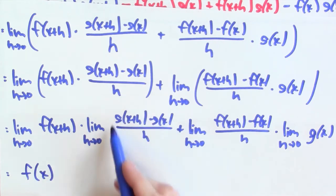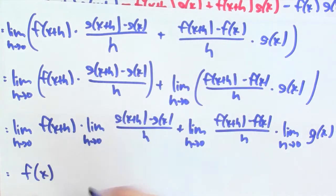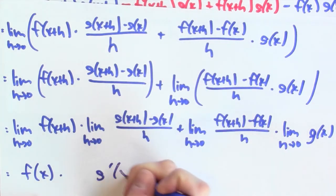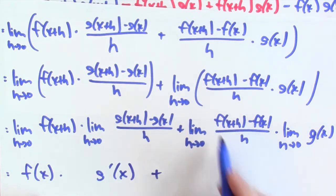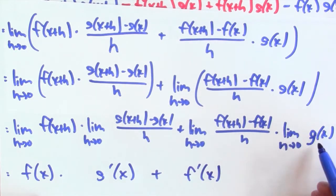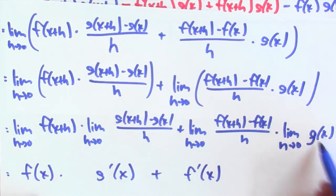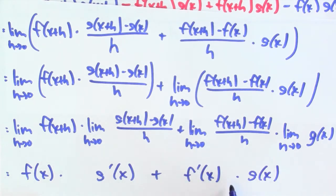The next limit is the limit of [g(x+h) minus g(x)]/h, which is exactly what calculates the derivative of g. Since g is differentiable by assumption, this is g'(x). Then the limit of [f(x+h) minus f(x)]/h is the derivative of f, which is f'(x). Finally, the limit of g(x) as h goes to 0 is the limit of a constant — wiggling h doesn't affect it — so that's just g(x). So the derivative of the product is f(x)·g'(x) + f'(x)·g(x). That is the product rule.